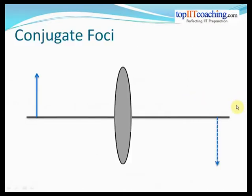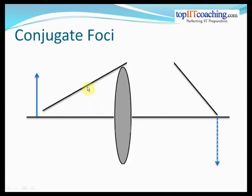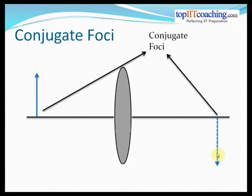The next concept is conjugate foci. This is not about special lenses — the simple truth is that the object and image are called the conjugate foci of each other. The image is the conjugate focus of the object and the object is the conjugate focus of the image. This is because all the rays from the object meet at the image, and all rays from the image meet at the object — similar to how rays from infinity meet at the focus of a lens. This was the last concept of our chapter — that's the end of Refraction at Spherical Surfaces Part 2.